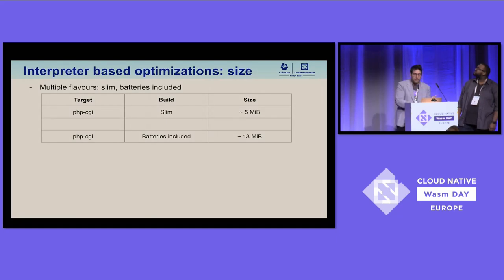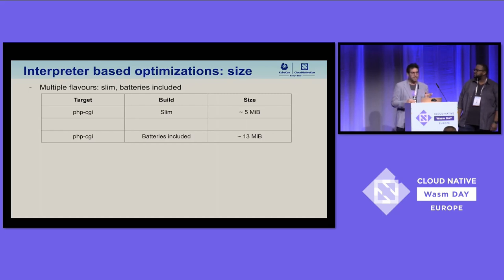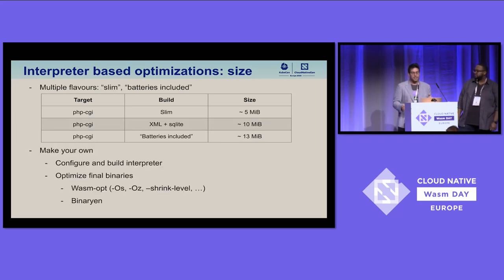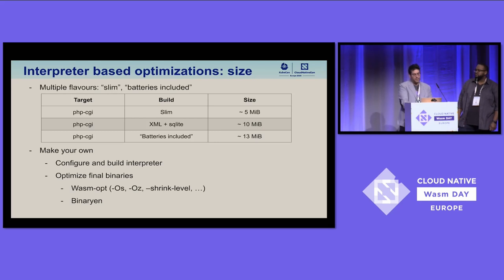We have slim and batteries-included versions of the interpreter. Slim is around 5 megs for PHP CGI; batteries-included versions are around 13 megs. But what if you need something in between? With WebAssembly Language Runtimes, you can build a custom version — for example, one with just XML and SQLite support at around 10 megs. You have all the pipeline in place to configure, build, and optimize your own interpreter.